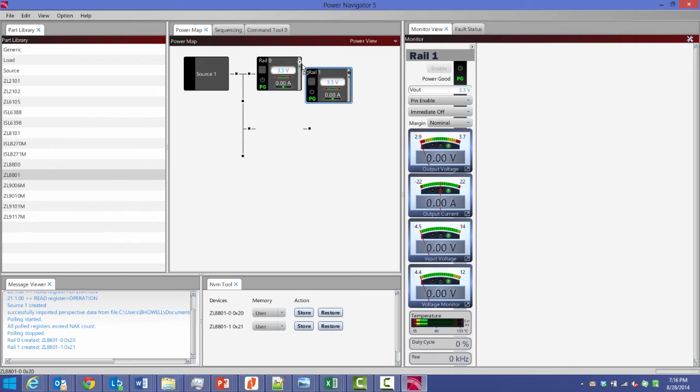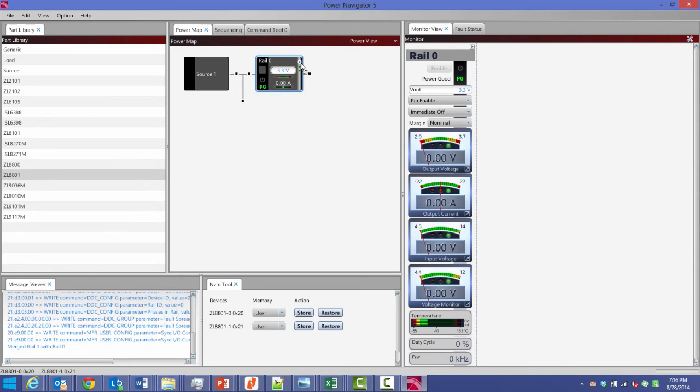And then when I drag it and drop it on top of the other one, that donut highlights. I let go of the mouse, and now I've got a four-phase current share configuration with the ZL8801.